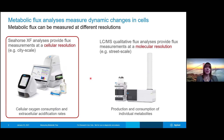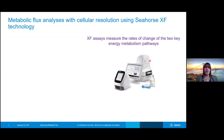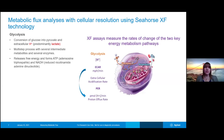I'll focus on the seahorse XF technologies first. The seahorse XF measurements are done at a cellular scale, telling us globally what cells are doing. The XF assays measure the rates of change of two key energy metabolism pathways. The first is glycolysis — what we're monitoring is the extracellular acidification rate caused by the cell's metabolism. In particular, cells will pump lactate into the extracellular space, and we can monitor this lactate production by looking at changes in pH.